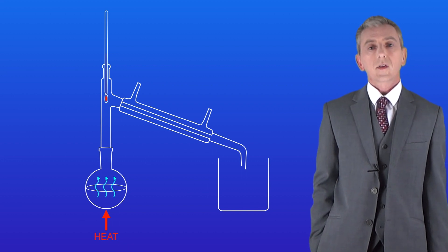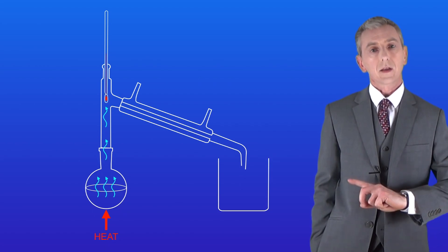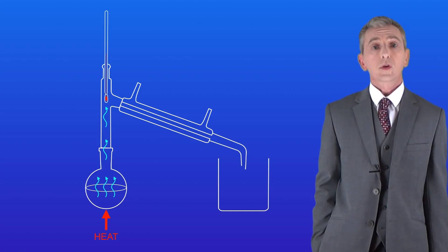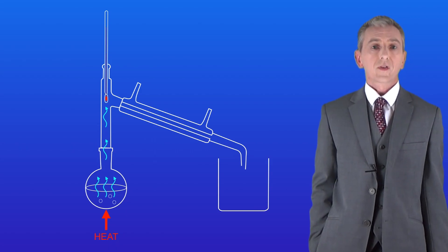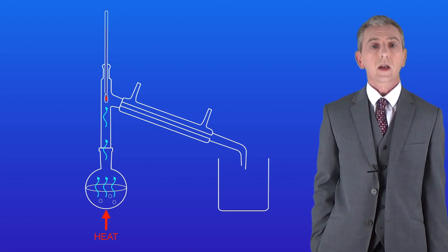As we heat the liquid it starts to evaporate turning into a vapor. This vapor now rises up the glass tube like this. The thermometer shows us that the temperature is rising but actually with simple distillation we usually just boil the liquid.